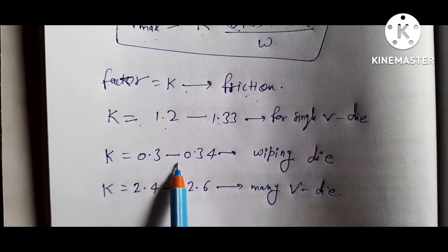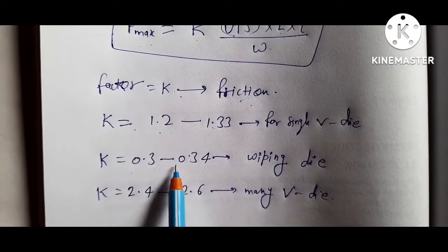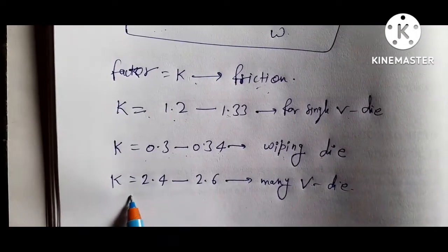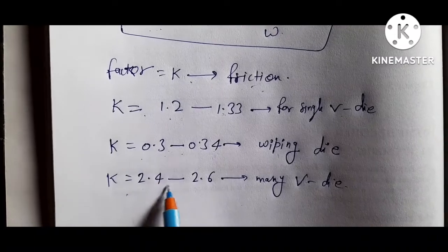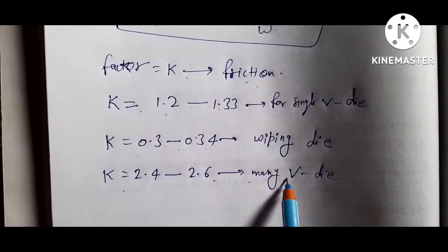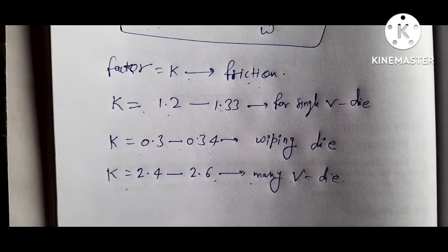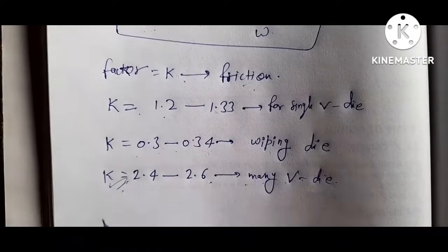K equals 0.3 to 0.34 for wiping die. And K you take 2.4 to 2.6 for many V die. If you use one, two, three V dies for bending operation, then this value is taken from this.